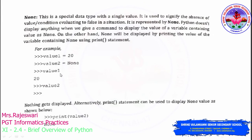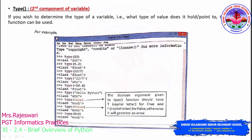If you call value1, 20 gets printed. If you call value2, nothing is displayed because no value was assigned — only None. Alternatively, using the print statement, print(value2) will display 'None'. Now let us discuss the 'type' function, which is the second component of a variable — after identity, we now look at type.